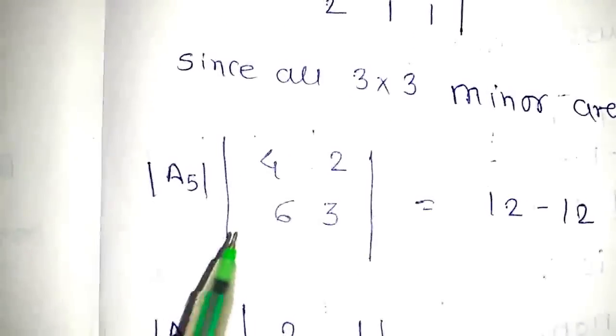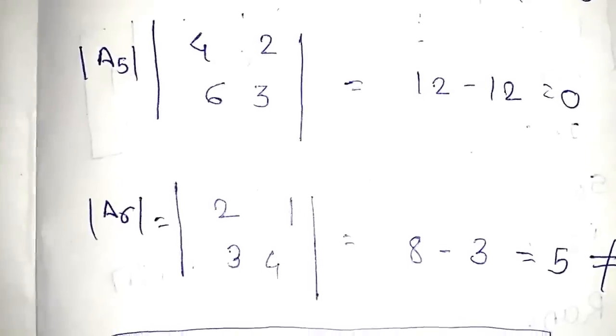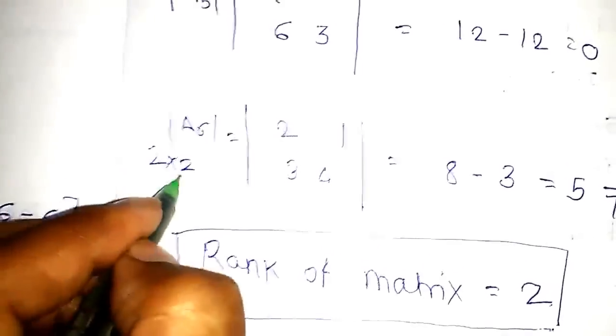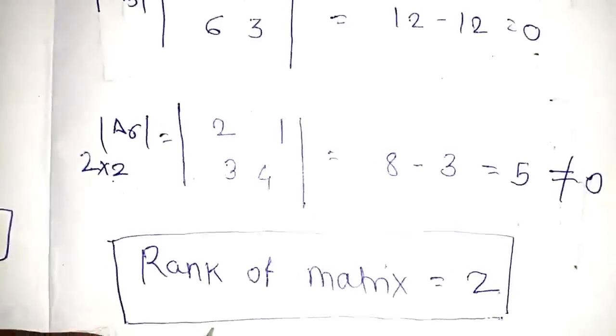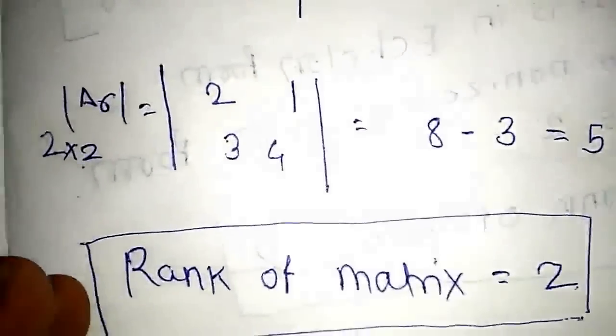Since all 3x3 minors are 0, the rank is not equal to 3. Now we go for the 2x2 square matrix. Taking the submatrix 4, 2, 6, 3: determinant is 4×3 − 12 = 0. Taking the next 2x2 submatrix 2, 1, 3, 4: determinant is 4×2 − 3 = 5, which is not equal to 0. So the rank of this 3x4 matrix is equal to 2.